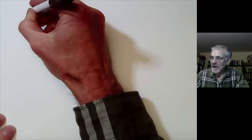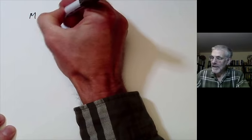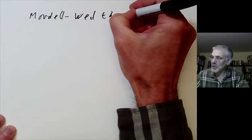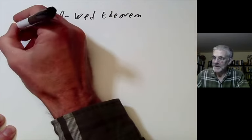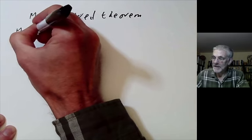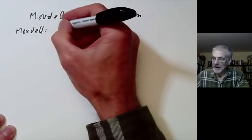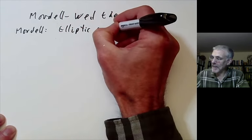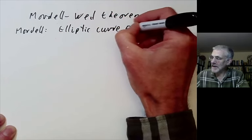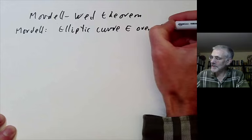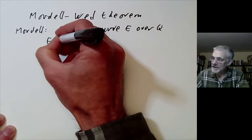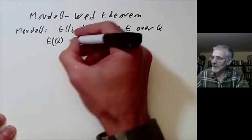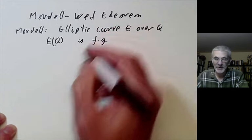This lecture will be about the Mordell-Weil theorem. I will start by recalling what this theorem says. Mordell, more than a century ago, showed that if we've got an elliptic curve, let's call it E, over the rational numbers Q, then the group of points on the elliptic curve with rational coordinates, noted by E(Q), is finitely generated as a group.